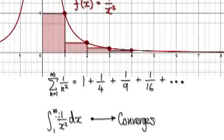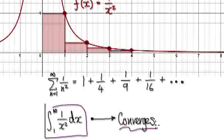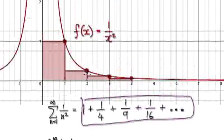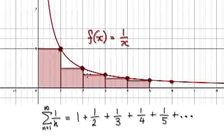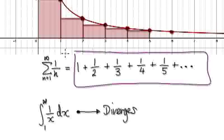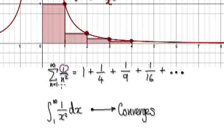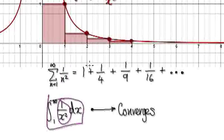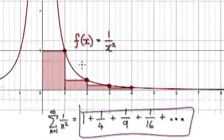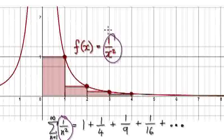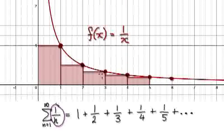In the previous topic, we established that when you integrate 1 over x squared from 1 to infinity, the area will converge to a certain definite number. As it turns out, this series here will also converge. So the series 1 over n diverges — similar to how the integral of 1 over x diverges. And then 1 over n squared, when you compare it to 1 over x squared — the integral converges, and for some reason, the series also converges. So there must be some sort of relationship between the integral and the series.